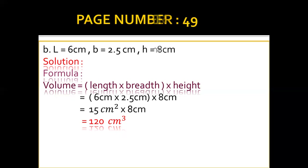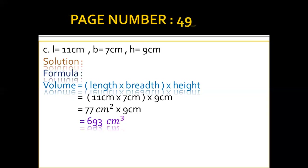The last part C: where L is 11, breadth is 7, and H is 9 cm. After the calculation, 693 cm³ is the volume of the given measurements.